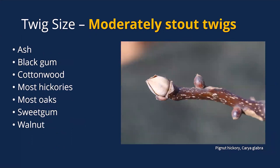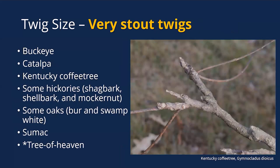Moderately thick or stout twigs include ashes, black gums, cottonwoods, most hickories, most oaks, sweet gums, and walnuts. Then a few trees have very stout twigs: buckeyes, catalpas, coffee tree, some hickories particularly shagbark, shellbark, and mockernut — which has the biggest twig of all the hickories — as well as bur oak, swamp white oak, sumac, and tree of heaven, which has a hugely thick stout twig even though it's not a native tree.